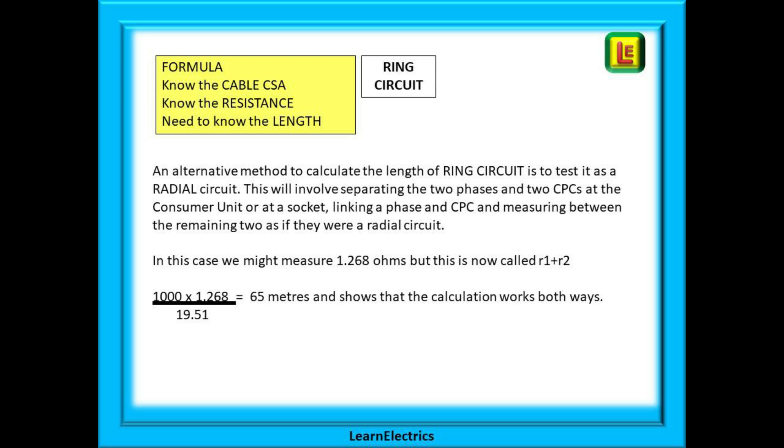With the four ends in front of you, connect any phase to any earth with a connector block, crocodile clips or wagos. Now measure between the remaining two ends. Let's say we measure 1.268 ohms.